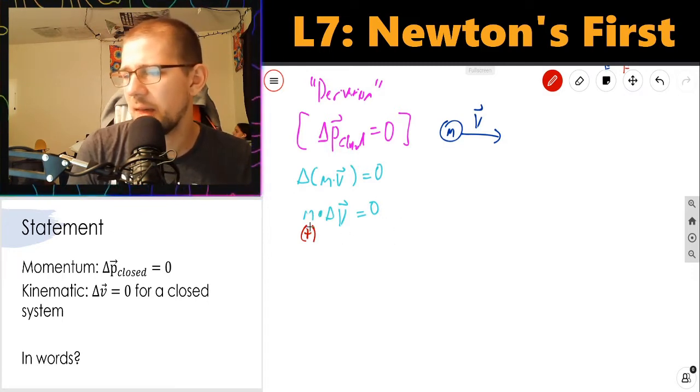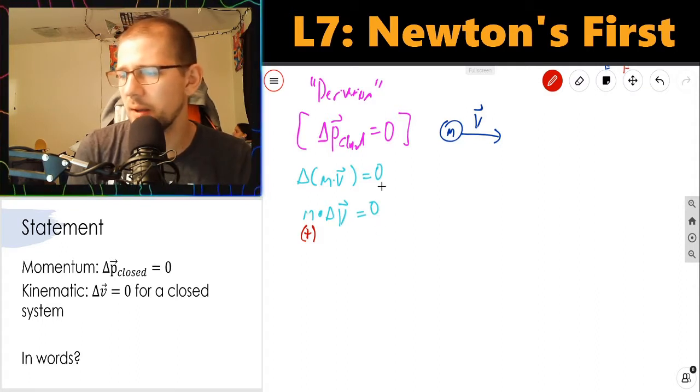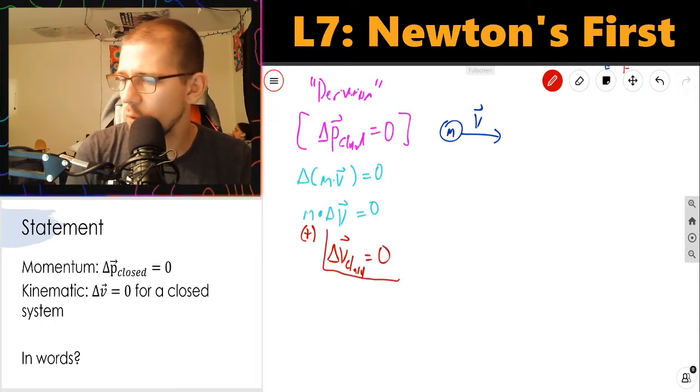I can just divide the other side by that positive number, and it'll all be hunky-dory. Zero divided by any positive number is just zero. So the change in velocity for this closed system is Δv = 0.